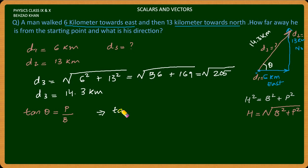Which implies that tan θ is equal to perpendicular upon base. So θ is equal to tan⁻¹(13/6), which implies θ is equal to 24.77 degrees East of North.